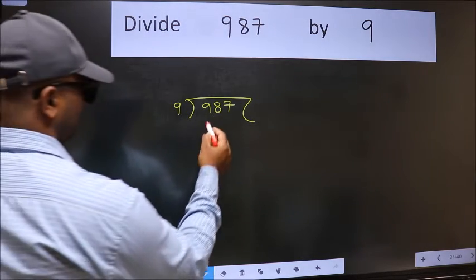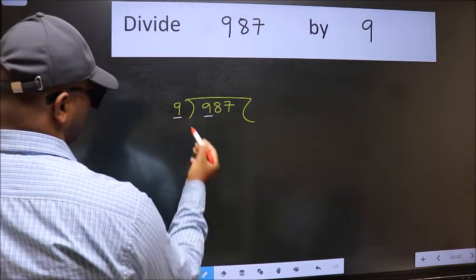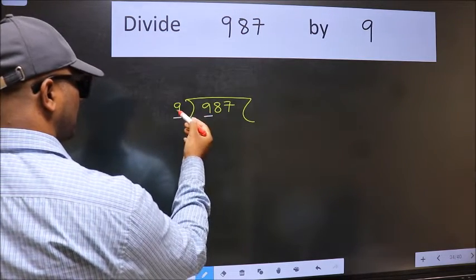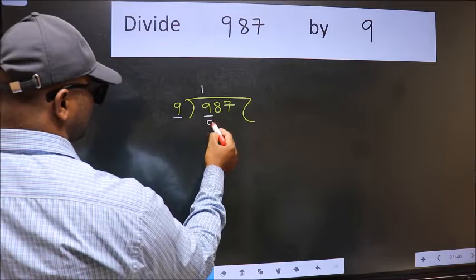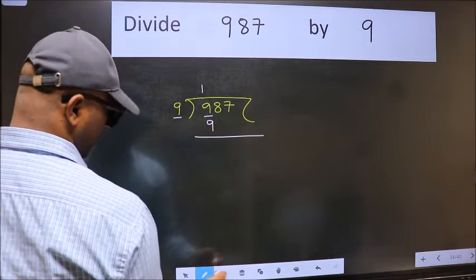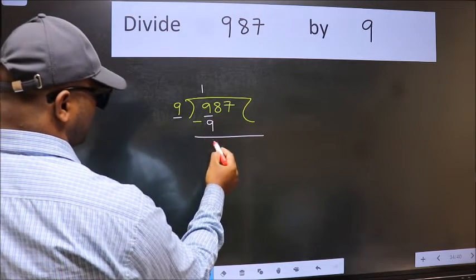Next. Here we have 9 and here 9. When do we get 9 in the 9 table? 9 once, 9. Now we should subtract. We get 0.